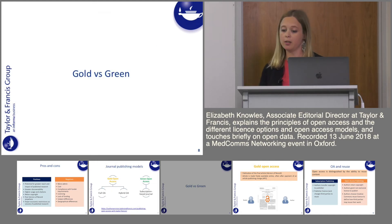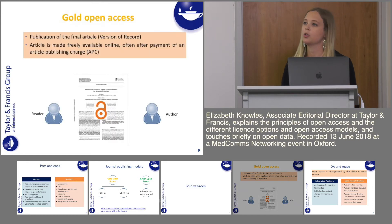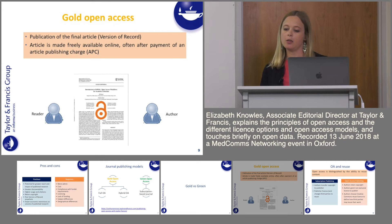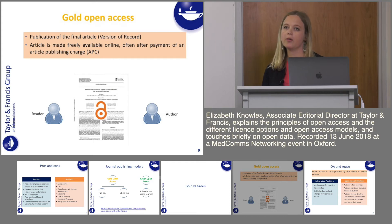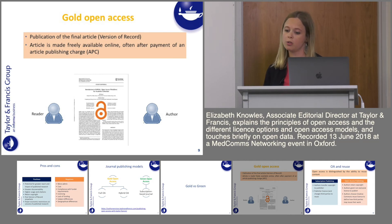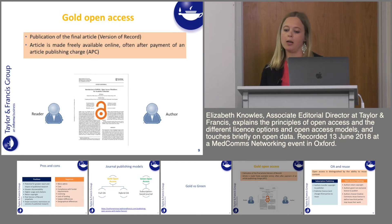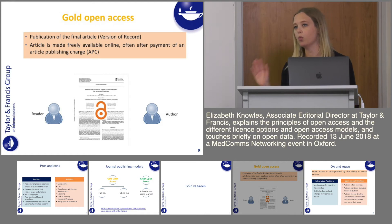So what is gold Open Access? This means that the final version of an article, commonly referred to as the version of record, is permanently and freely available online for anyone, anywhere to read. There are few or sometimes no restrictions on how people can reuse the work, but they usually have to credit the author. The authors retain their copyright and usually have to pay an article publishing charge to make the article available via gold Open Access — so now the author pays the charge so that the reader can access the content for free.